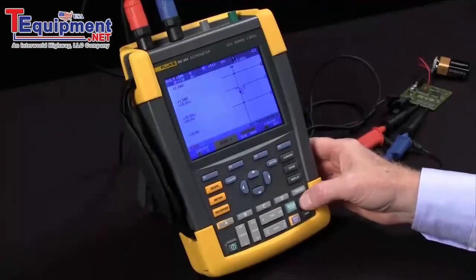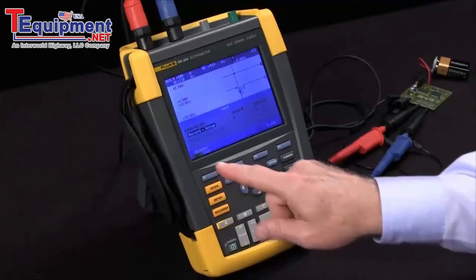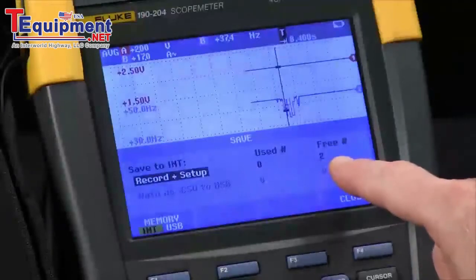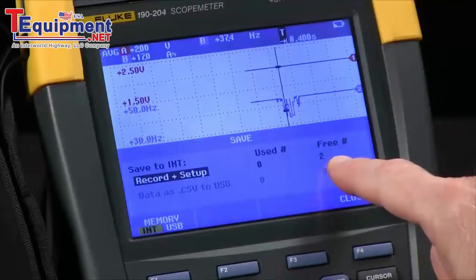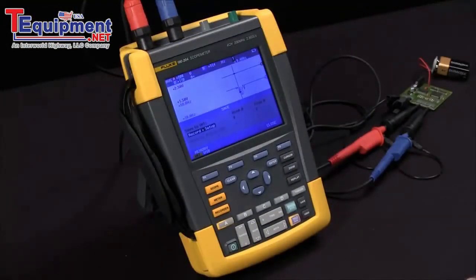If I want to save, I hit the save button, F1 to save, and I can record and save up to two recordings and setups for trendplot. And that's how you use the scope meter trendplot function.